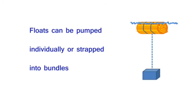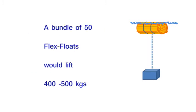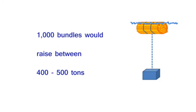Floats can be pumped individually or strapped into bundles. A bundle of 50 flex floats has the lift capacity of between 400 and 500 kilograms. So a thousand bundles would lift between 400 and 500 metric tons.